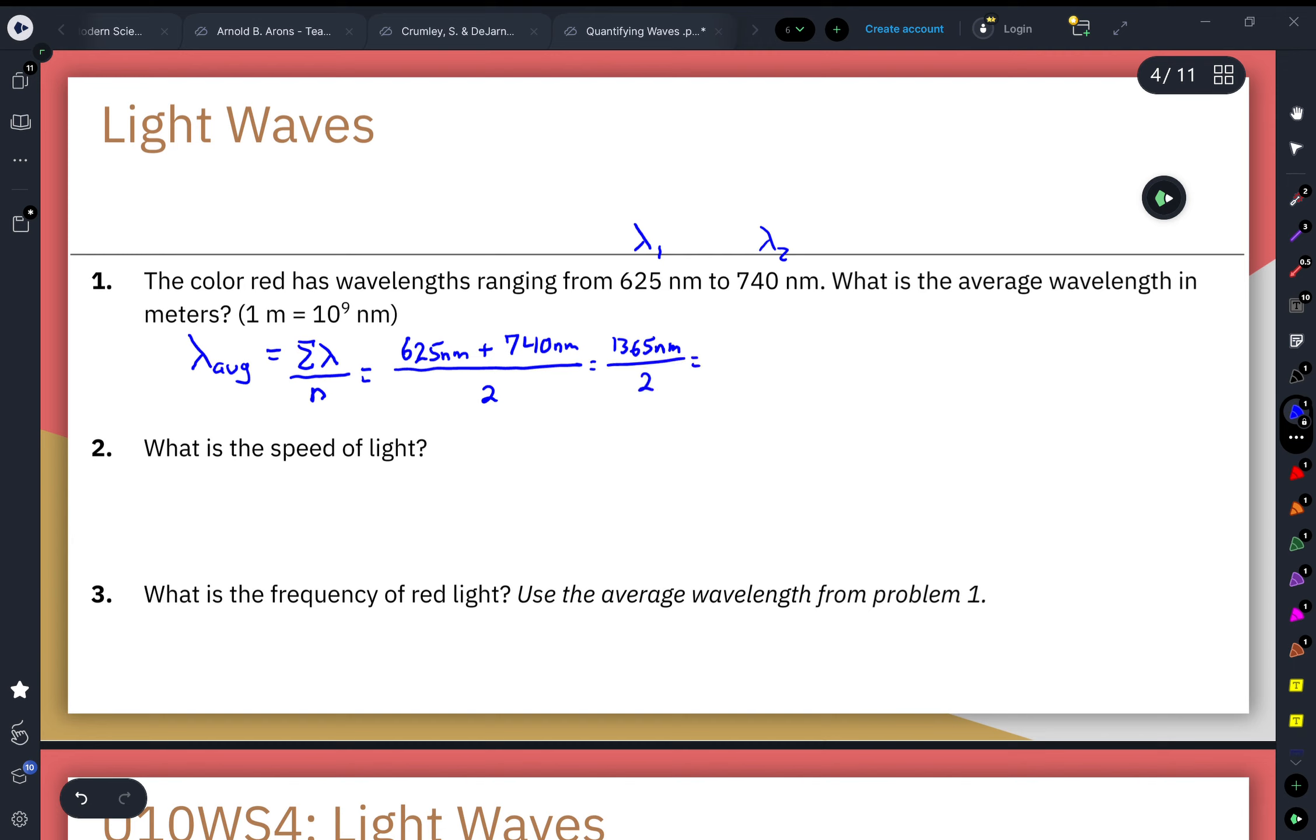Which means on average red has an average wavelength of 682.50 nanometers. However, this problem wants the wavelength in meters, so we just do a units conversion. We're going from nanometers to meters.